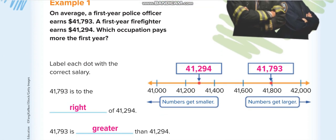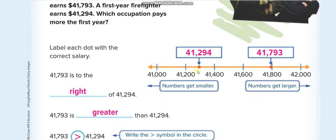Here they're talking about a number line. On a number line, we write numbers in sequence with equal distance between them. For example, they write: forty-one thousand, forty-one thousand two hundred, four hundred, six hundred, eight hundred, and forty-two thousand — so the numbers increase by two hundred each time. A number line can have any numbers in a sequence.